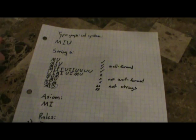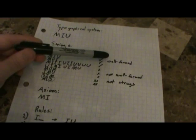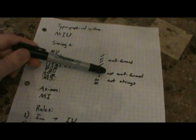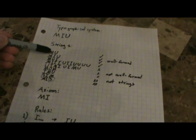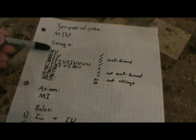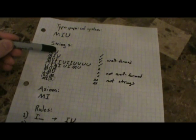I understand that we're starting out probably a little too simple, but believe me, understanding this is going to come in very handy later. The next thing you'll notice is that some of them are called well-formed strings and some of them are not well-formed. In order to be a well-formed string, you need to start with the letter M, and then after that, the only characters you're allowed to use are U and I. So M begins every well-formed string and does not appear anywhere else.